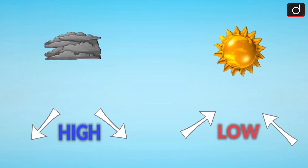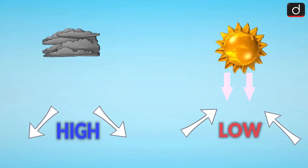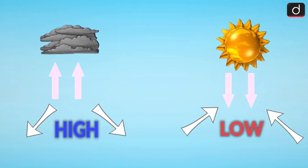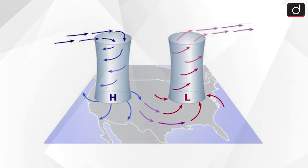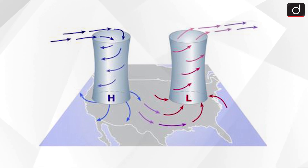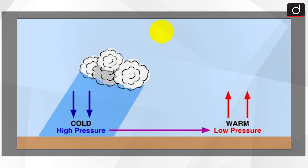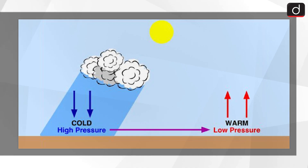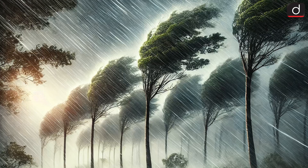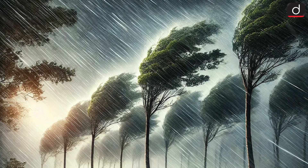Areas with higher temperatures have low pressure zones, while areas with higher pressure have cooler air. Air moves from high pressure areas to low pressure areas. Consequently, the cooler sea air moves towards the warmer land areas, bringing moisture with it. These moisture-laden winds are known as monsoon winds.